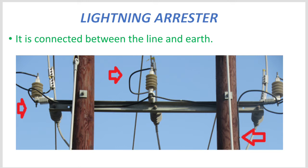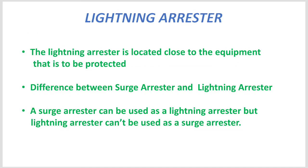The lighting arrester's major usage is simple — to avoid abnormal situations. The lighting arrester is used to avoid abnormal high voltage events. This is the major role of the lighting arrester.